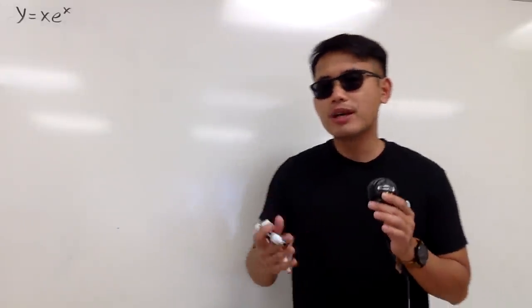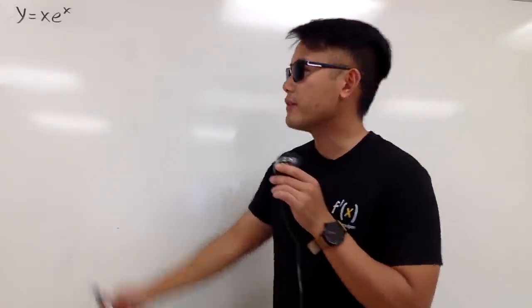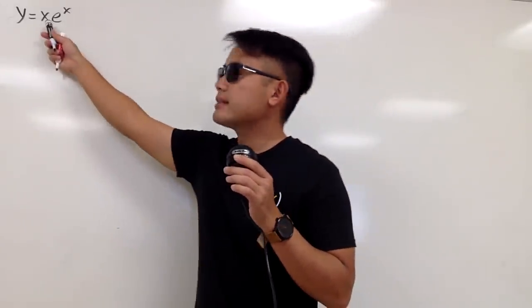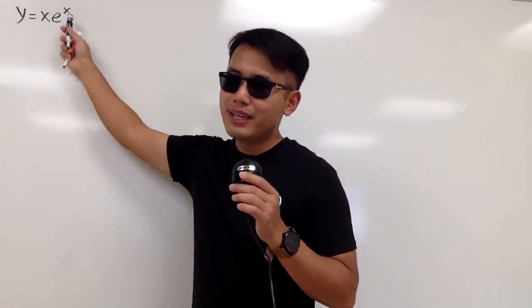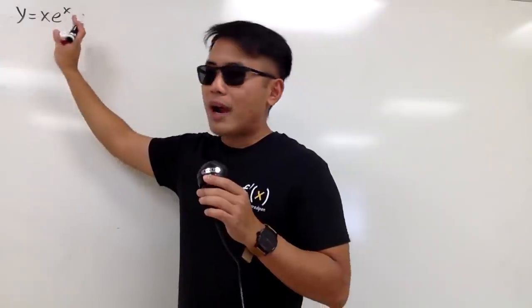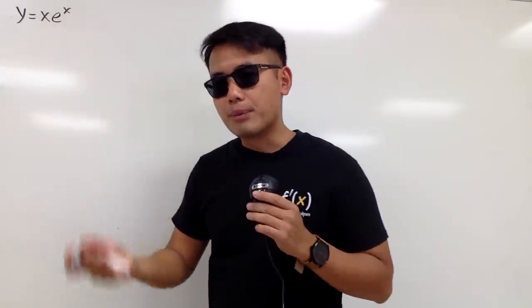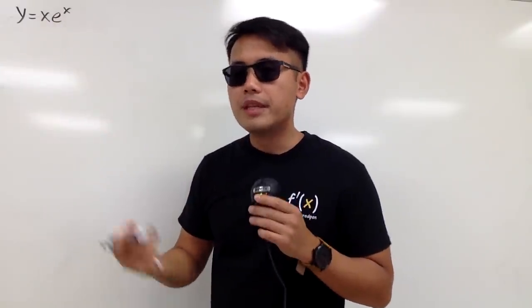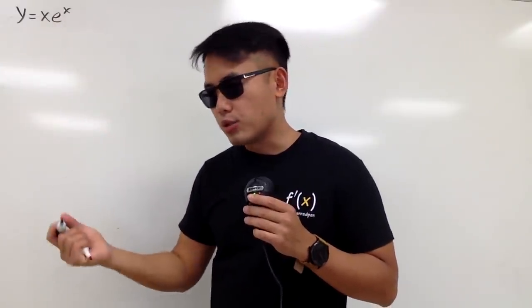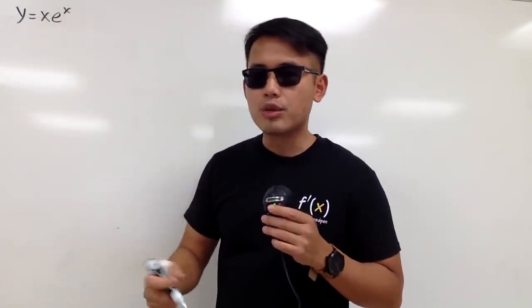In this video, I'm going to show you how to make the graph of the function x times e to the x. To get the graph, I'm going to have some prep work — namely, I need the first derivative and the second derivative.